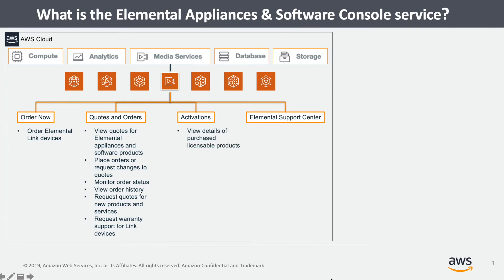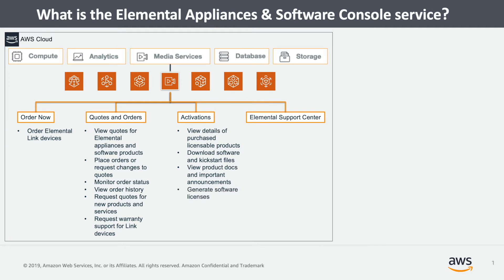Within Activations, you can view details of your purchased licensable products, download software and Kickstart files, view product documentation such as release notes, hardware spec sheets, and other important product announcements. You can generate software licenses, and you can share access to purchased products with other AWS accounts.